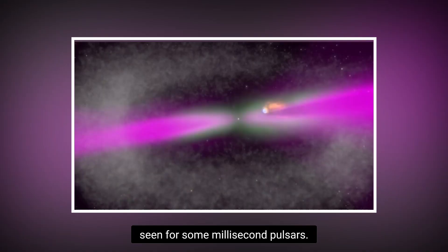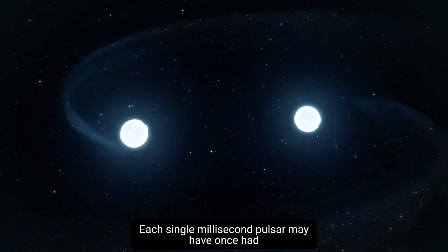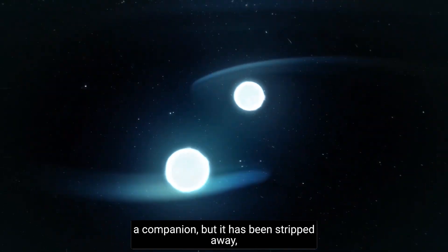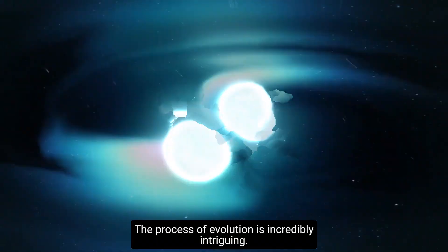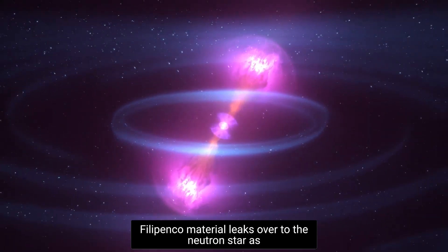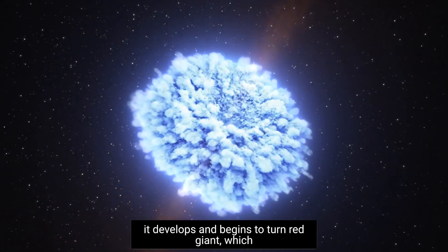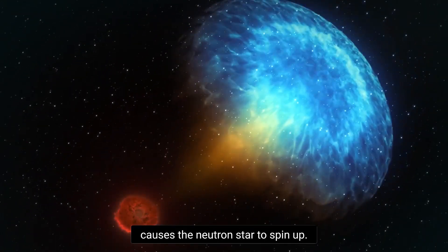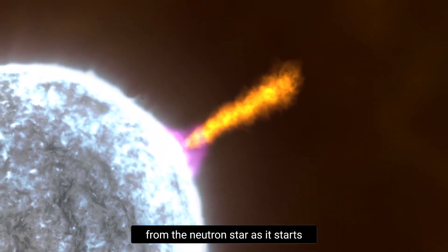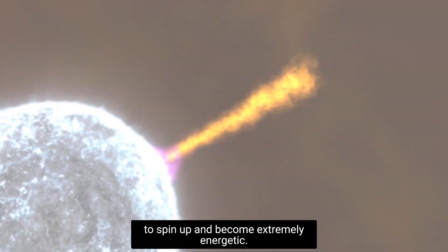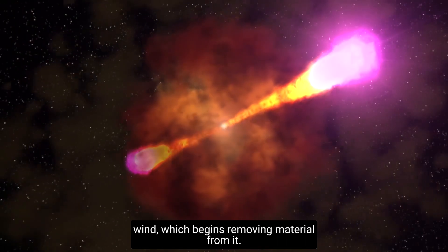However, no companion may be seen for some millisecond pulsars. Each single millisecond pulsar may have once had a companion, but it has been stripped away, which is one explanation for their isolation. The process of evolution is incredibly intriguing, stated Filippenko. Material leaks over to the neutron star as it develops and begins to turn red giant, which causes the neutron star to spin up. A jet of particles begins to emanate from the neutron star as it starts to spin up and become extremely energetic. The donor star is then struck by that wind, which begins removing material from it.